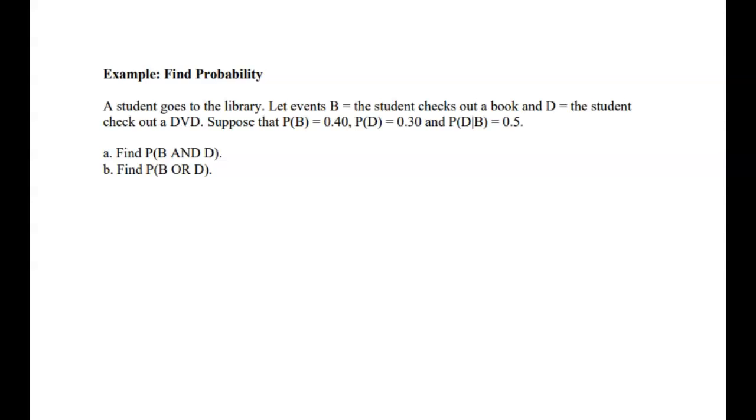A student goes to the library. B is the event that the student checks out a book, D is the event the student checks out a DVD. Suppose P of B equals 0.4, P of D equals 0.3, and P of D given B equals 0.5.